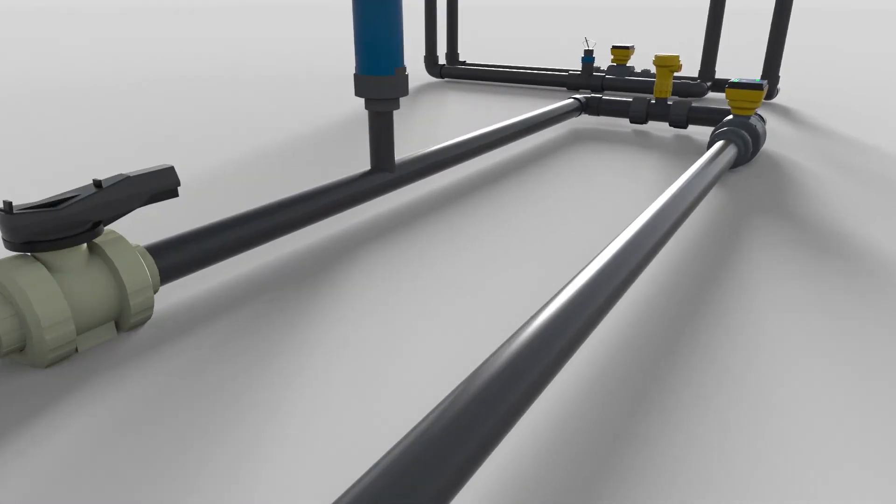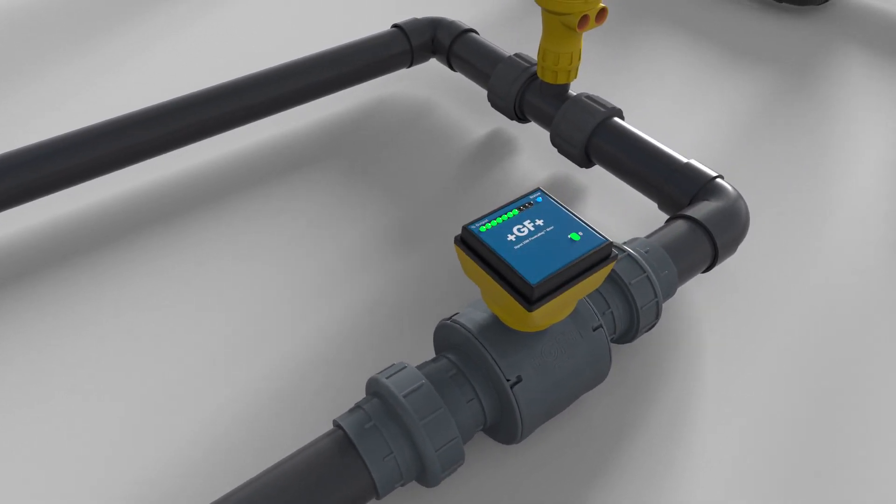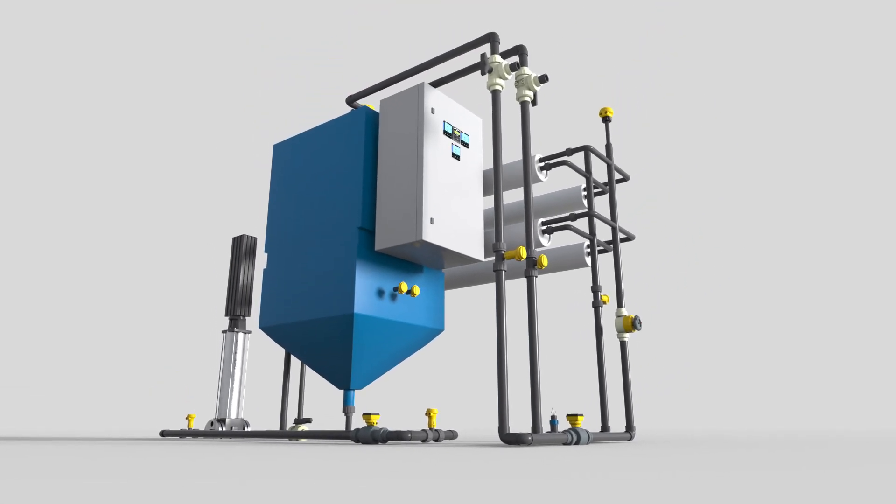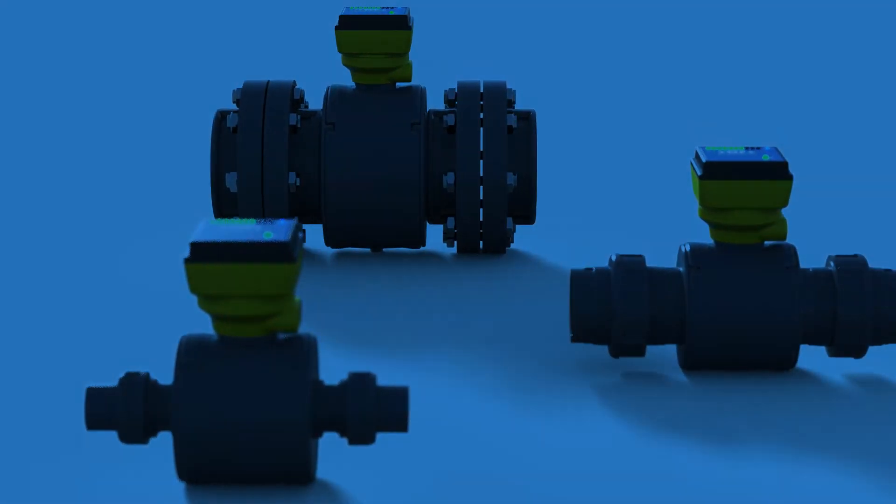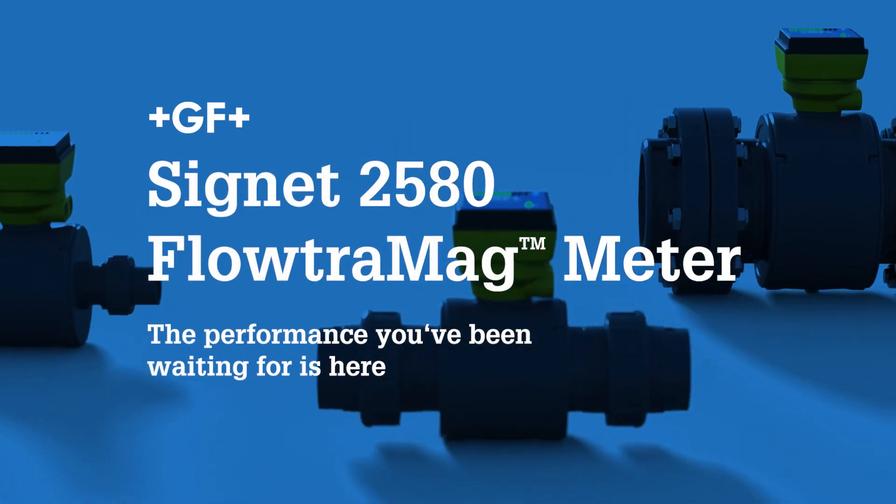The new Signet 2580 Floetra Mag meter from GF Signet offers a new solution for users seeking higher flow measurement accuracy in problematic short pipe runs. That's the simplicity of the GF Signet Floetra Mag meter. The performance you've been waiting for is here.